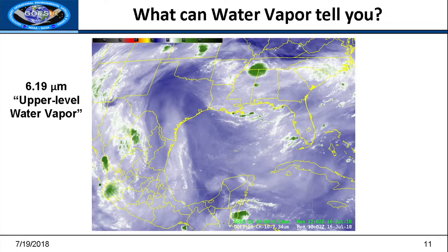What can water vapor tell you? You can make a guess about atmospheric circulation by looking at water vapor imagery. If I were to ask where the cyclonic or anti-cyclonic circulation is, you can trace out a circulation in the water vapor — of course it's a lot easier if it's animating. This is a still image, but you can trace out a nice circulation where we have dry air coming up into Texas.